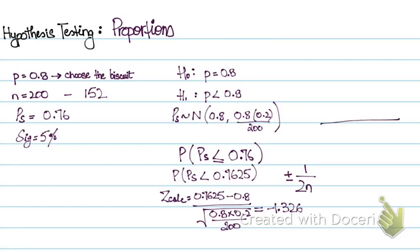So on the bell curve, this is where it will lie. And my Z critical value is basically at 0.95% and my critical region is on the left-hand side because my alternative hypothesis is P less than 0.8.